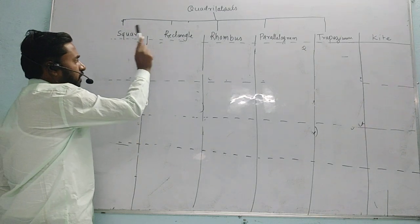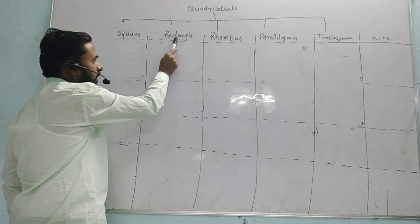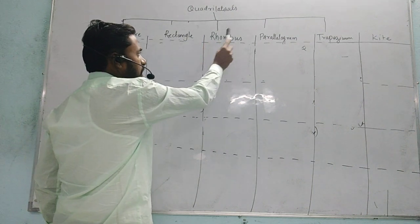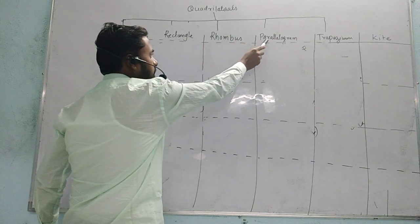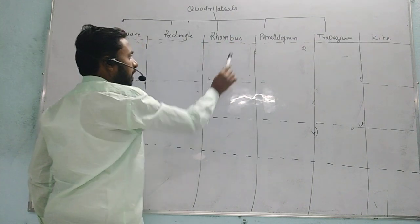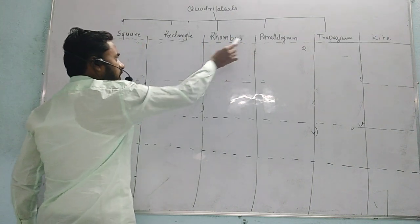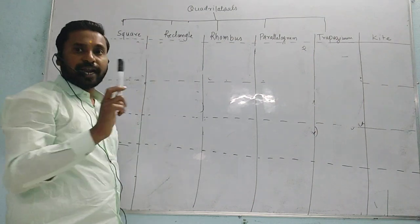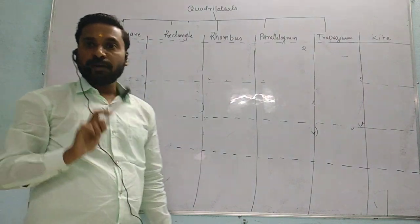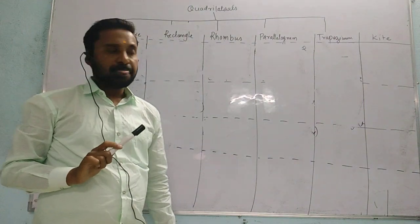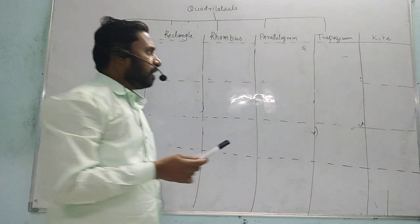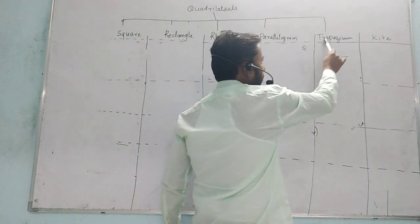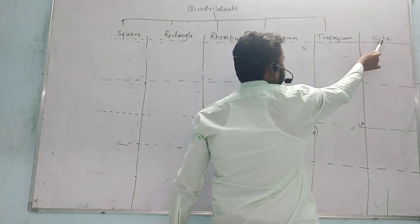The first one is square, the second one is rectangle, the third one is rhombus, and the fourth one is parallelogram. All these four quadrilaterals come under the category of parallelogram. Then the fifth one is trapezium and the sixth one is kite.